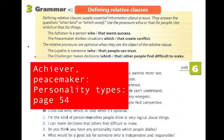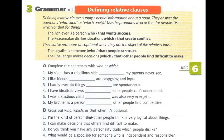Let's see the first example: 'The achiever is a person who — or that — wants success.' What are the two clauses? The first clause is 'the achiever is a person,' and the second is 'the achiever wants success.' When we combine them, we use the relative pronouns 'who' or 'that' to replace 'the achiever.'